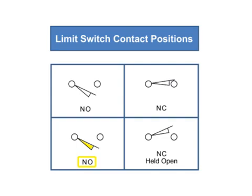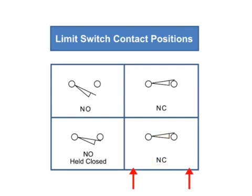A normally open limit switch will remain open until the actuator is acted upon by an outside force or object, thus holding it closed. A normally closed limit switch will remain closed until an outside force or object holds it open.